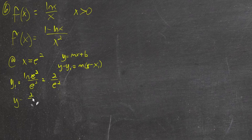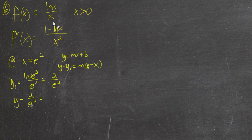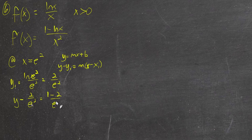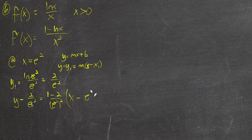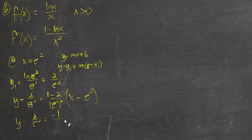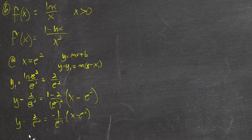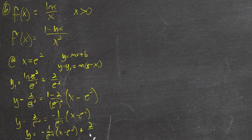So y minus 2 over e squared equals the slope at e squared. This gives the slope, so we put e squared in there: 1 minus the natural log of e squared (which is 2) over x squared, where x is e squared, so x squared is e to the fourth. That gives us a slope of negative 1 over e to the fourth. So the equation is y minus 2 over e squared equals negative 1 over e to the fourth times (x minus e squared), or equivalently y equals negative 1 over e to the fourth times (x minus e squared) plus 2 over e squared.